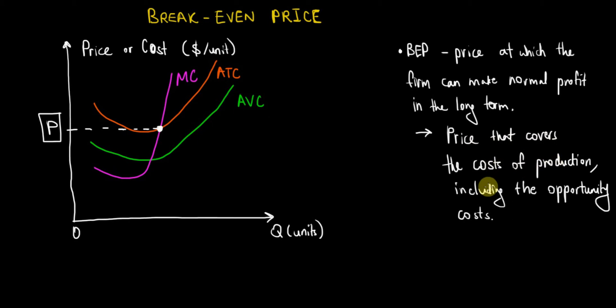In other words, in this graph over here, on our cost axis, on our vertical axis where we have the price or the cost, we can show both on this graph.